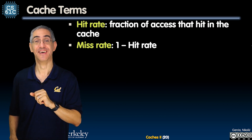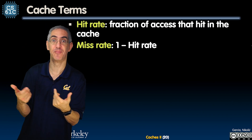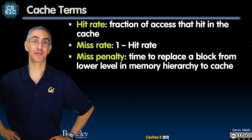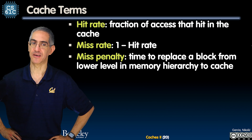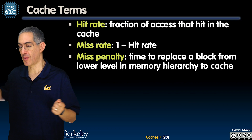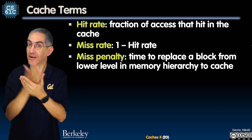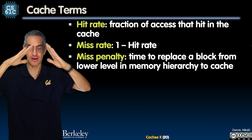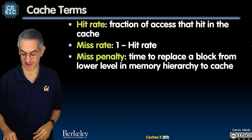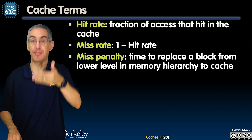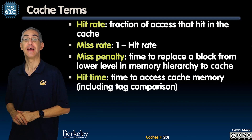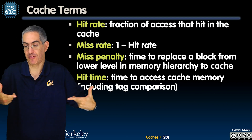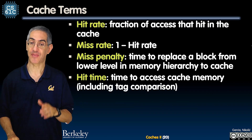Miss penalty is the time to replace the block. When I have a miss, there's a penalty — the time to replace a block from the lower level is my miss penalty. This is true for any cache to the level below. You have this miss penalty: how long does it take to get to the level below and bring it back into the level above? The hit time is the time to access the cache memory. This counts the tag comparison time. Many of these operations are in hardware and done in parallel, so they're fast, but hit time is still a factor.